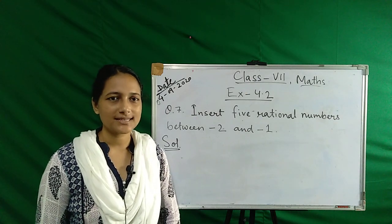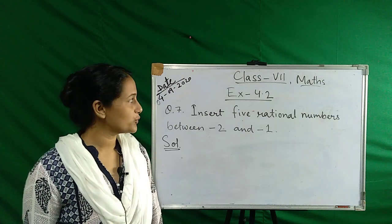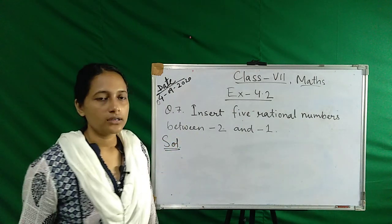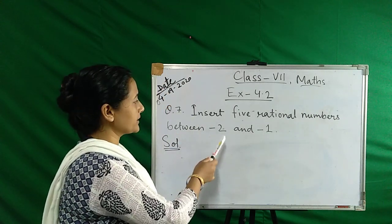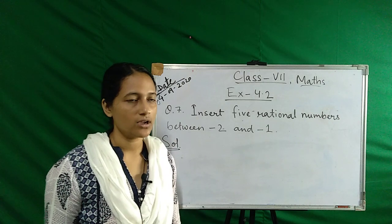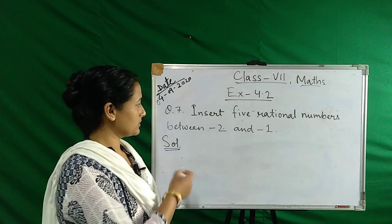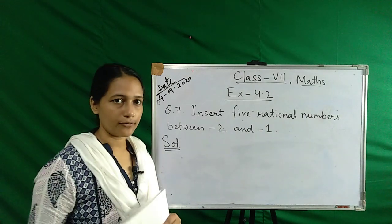Hello students, this is math class, Class 7 math, exercise 4.2. This is the seventh number question: insert five rational numbers between minus 2 and minus 1. So how to find out five rational numbers? Listen carefully.